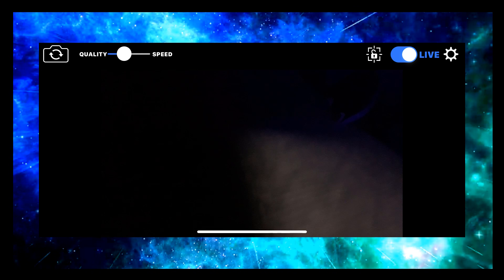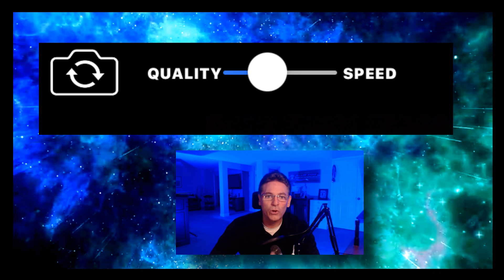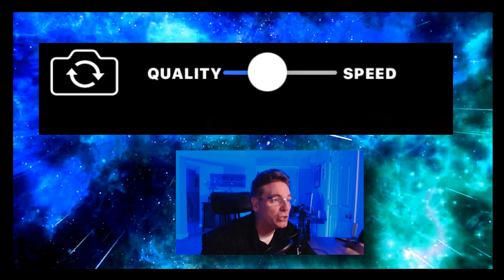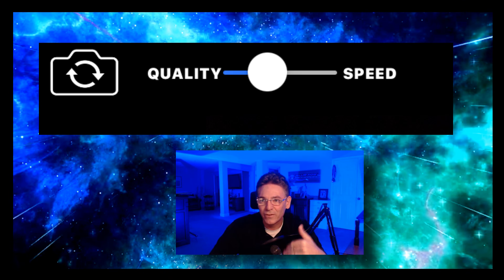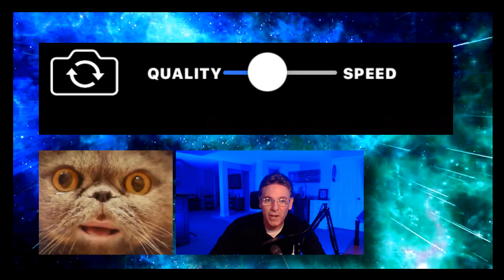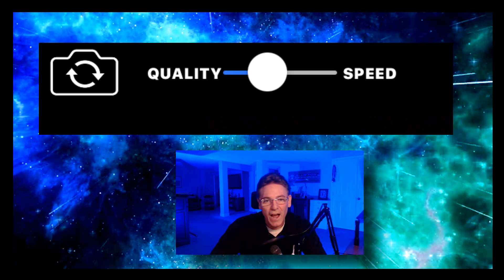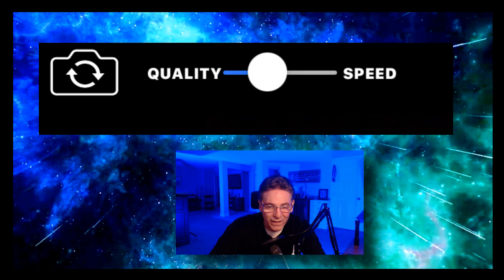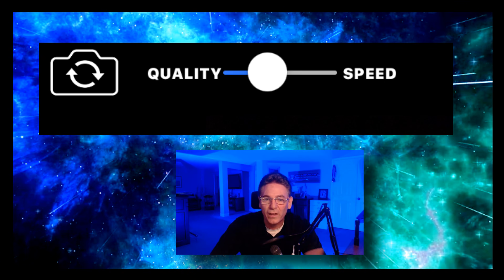The first screen you see when you open the NDI application on iPhone has an important parameter in the upper left corner: a quality versus speed slider. If you go all the way to the left you'll have high resolution but more transmission delay, which could cause lip-sync issues. I recommend putting the slider in the middle or slightly towards the speed side to get zero latency with decent quality. There is also a live slider that turns the broadcast on and off.